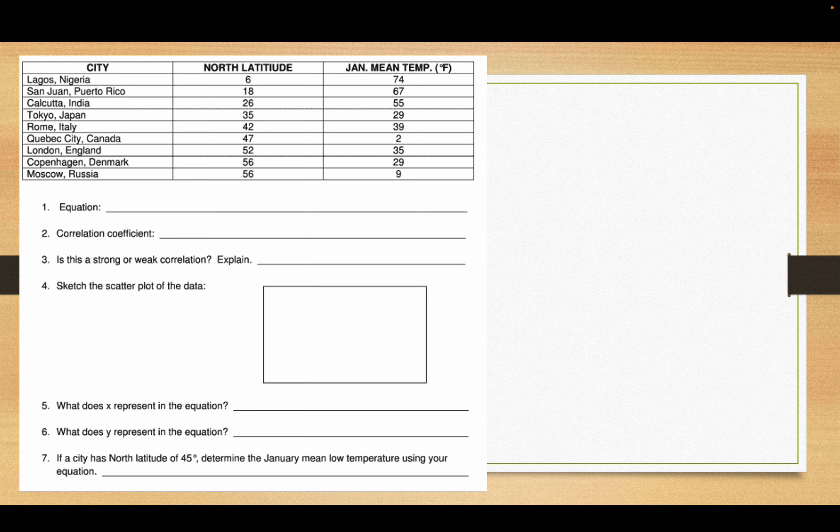Then go into STAT CALC, fourth one down, and it'll say y equals ax plus b, then it'll give you the values for a and b. In this case the value for a was negative 1.17 and for b was 81.79. So your linear regression equation is y equals negative 1.17x plus 81.79.